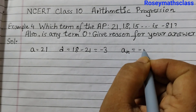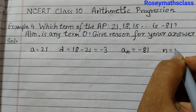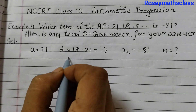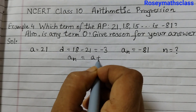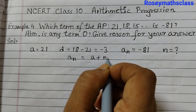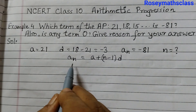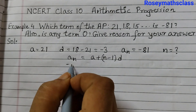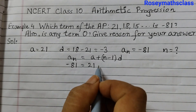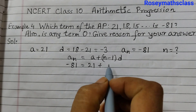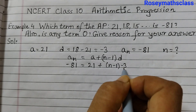Aₙ is equal to minus 81 — we need to find out what N is. We will use the formula Aₙ = A + (N − 1) × D. So Aₙ is minus 81, equal to 21 plus N minus 1 into minus 3.